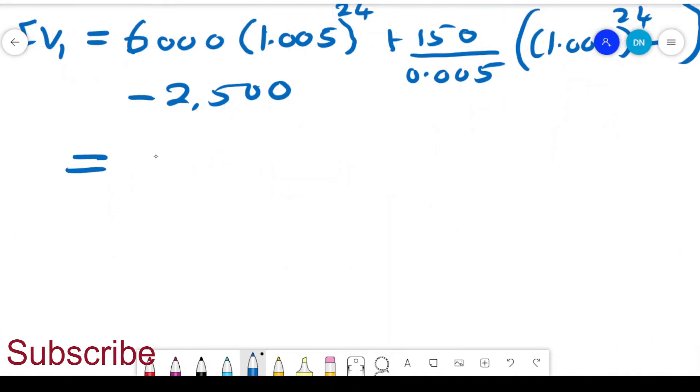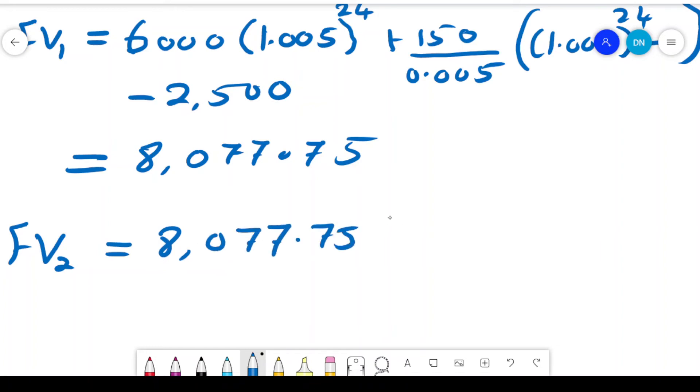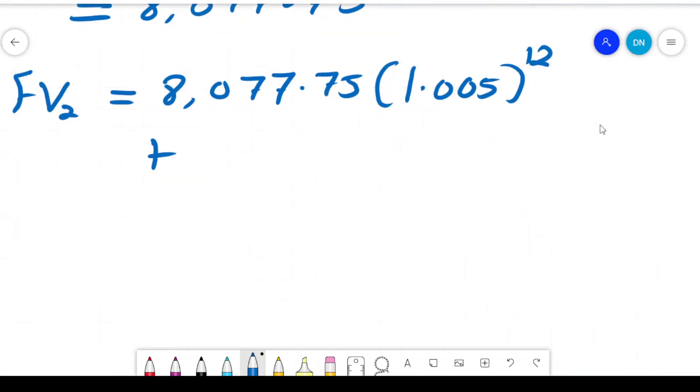Now, this is $8,077.75. This is at the end of the two years. This is the amount in the account. To get the future value 2, or which is the future value, we'll take this $8,077.75 and then we compound it. Then we'll be adding up the amount that she deposited for the next 12 months, which is given by $150 divided by 0.005. So it is 1.005 to power 12 minus 1.